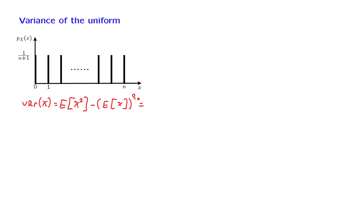We use the expected value rule. With probability 1 over (n plus 1), the random variable x squared takes the value 0 squared. With the same probability, it takes 1 squared, 2 squared, and so on, all the way up to n squared. Then there's the next term. The expected value of the uniform is the midpoint of the distribution by symmetry, so it's n over 2, and we take the square of that.